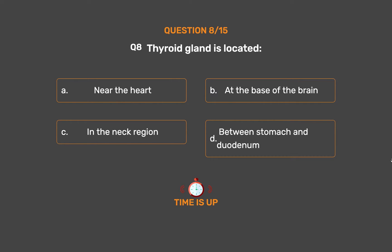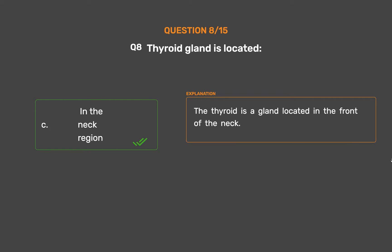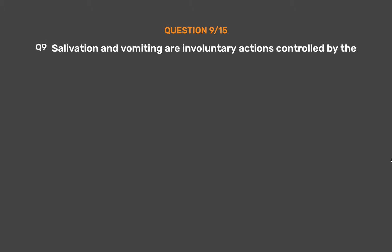The correct answer is Option C, In the neck region. The thyroid is a gland located in the front of the neck.